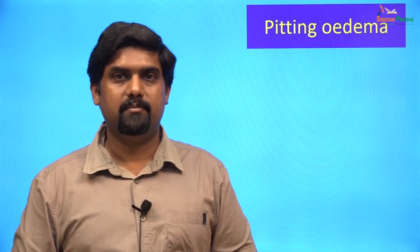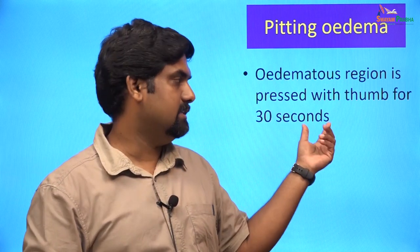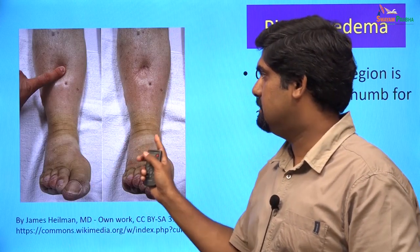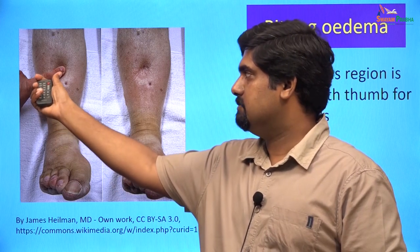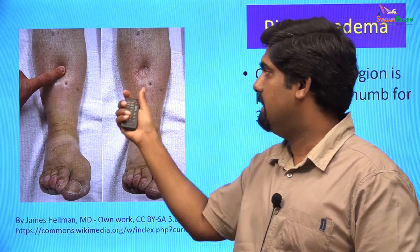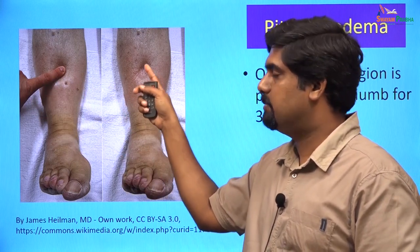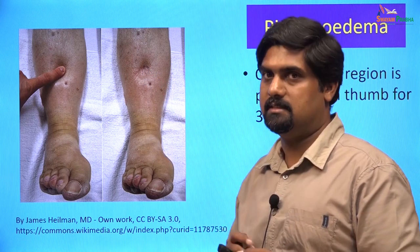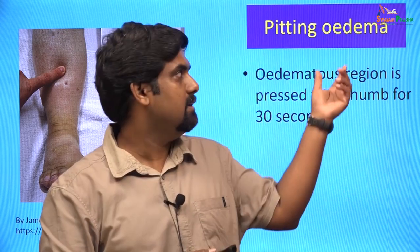The presence of edema can be checked by pressing the edematous region with the thumb for 30 seconds. Here we have the picture of a patient with edema of the lower limbs, and the doctor presses the edematous region with the thumb for 30 seconds. After the thumb is removed, we can see that there is a depression or pit formed because of the shift of fluid from this region to the adjacent regions. Such a type of edema is known as pitting edema.